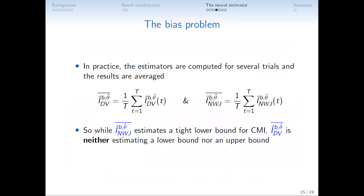The bias problem can become severe when we need to take several trials and average the results, such as for cross-validation. We call these averaged estimations our ultimate estimator. Note that the NWJ estimator provides a tight lower bound, but the Donsker-Varadhan estimator is neither strictly a lower bound nor an upper bound due to Jensen's inequality arising from the logarithm term.